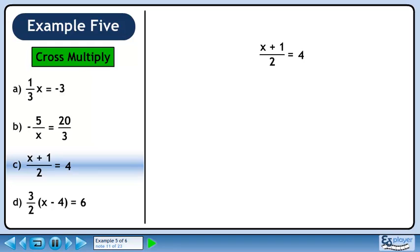In part c, we have x plus 1 over 2 equals 4. We already have a fraction on the left side and we can convert 4 into a fraction by writing it over 1.